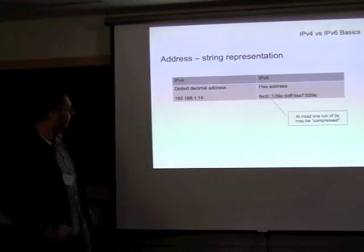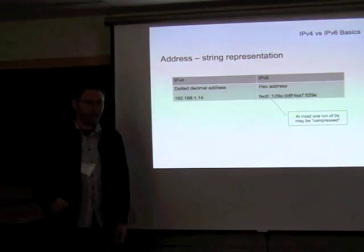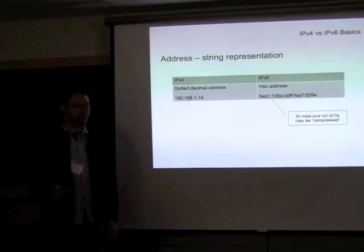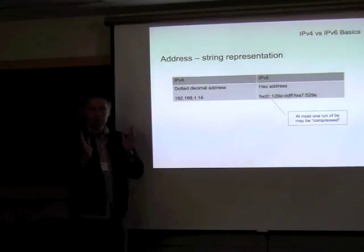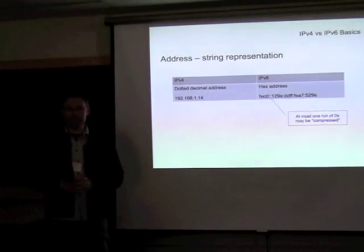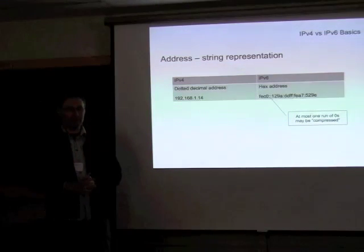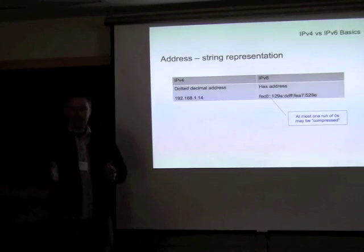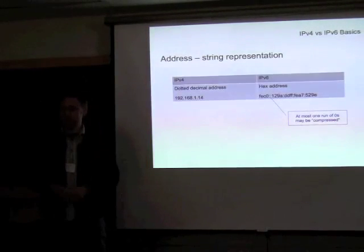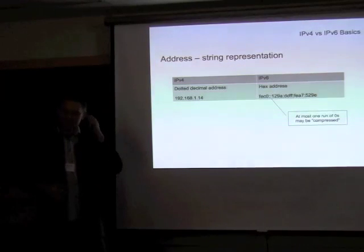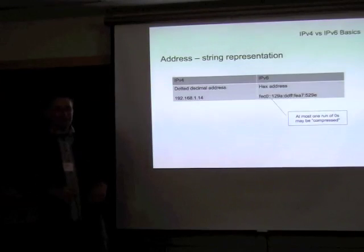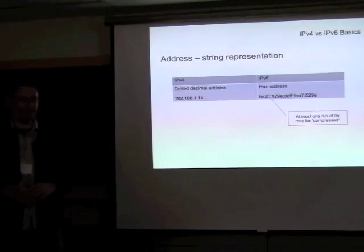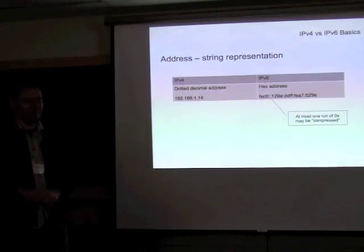You are allowed to compress one run of zeros in an IPv6 address by dropping it and leaving the colons there. They're trying to make them — at least within a local network — something you can maybe remember.